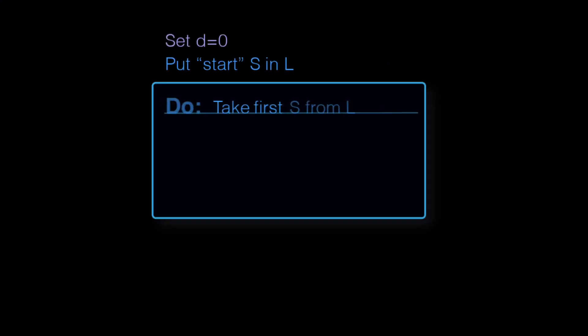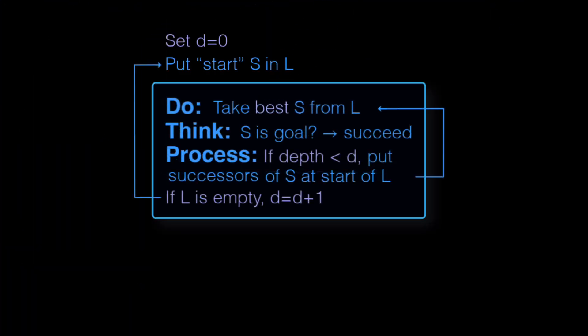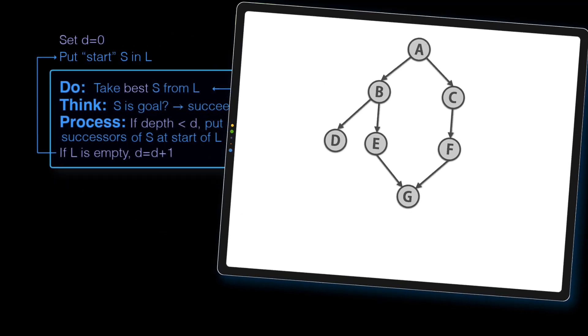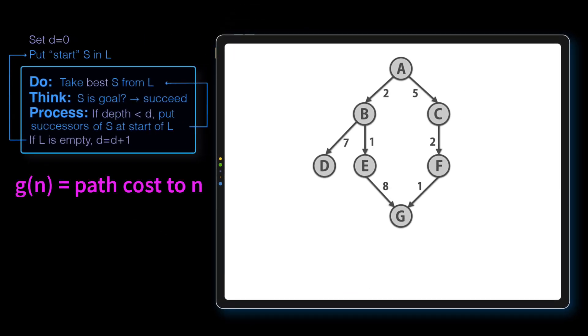For any time use, nodes need evaluations, so we can pick the best. As an example, we'll use a path cost function, G.